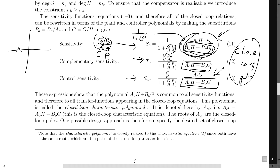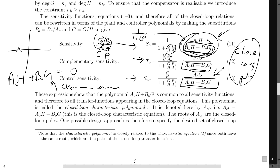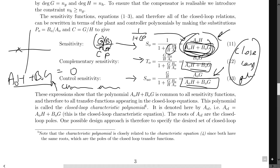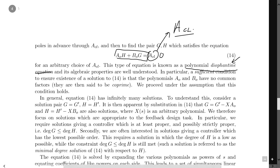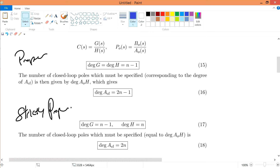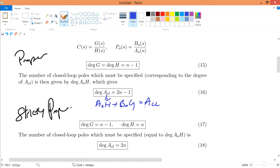We can plot your closed loop poles over the root locus to see whether it is safe. This characteristic equation is something we often use. Instead of calling it the characteristic equation all the time, we call it something else with a very nice name — we call this the polynomial Diophantine equation. This is your characteristic equation in the name of the Diophantine equation, where A-naught·H plus B-naught·G equals zero, and A_CL is your closed loop A.